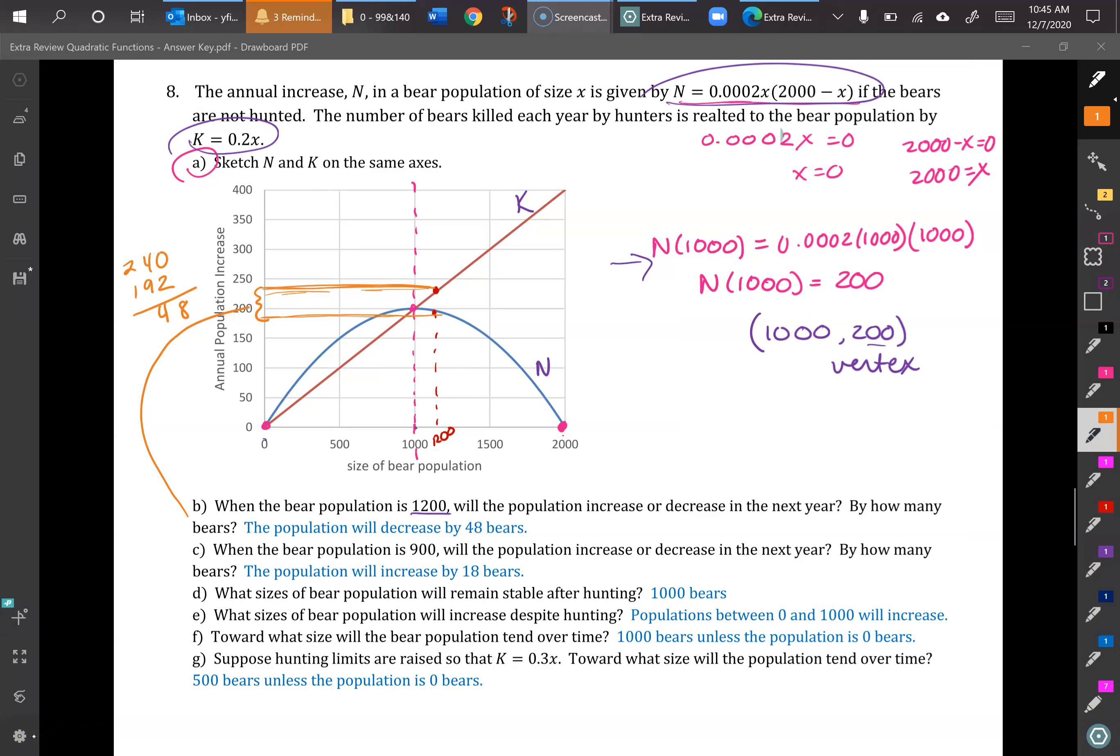For part b we have to find the difference in these two. So I kind of sketched it out here. I did figure out the numbers, I'll show you how to do that. Here's 1200, when the curve, the bear population not considering hunting, that would go down a bit here. If I plug that value in there, the 1200, and find N of 1200, I'll let you crunch the numbers, just put 1200 in for x and solve. You will get 192. If you put it into the k function, put the 1200 in, you will get 240.